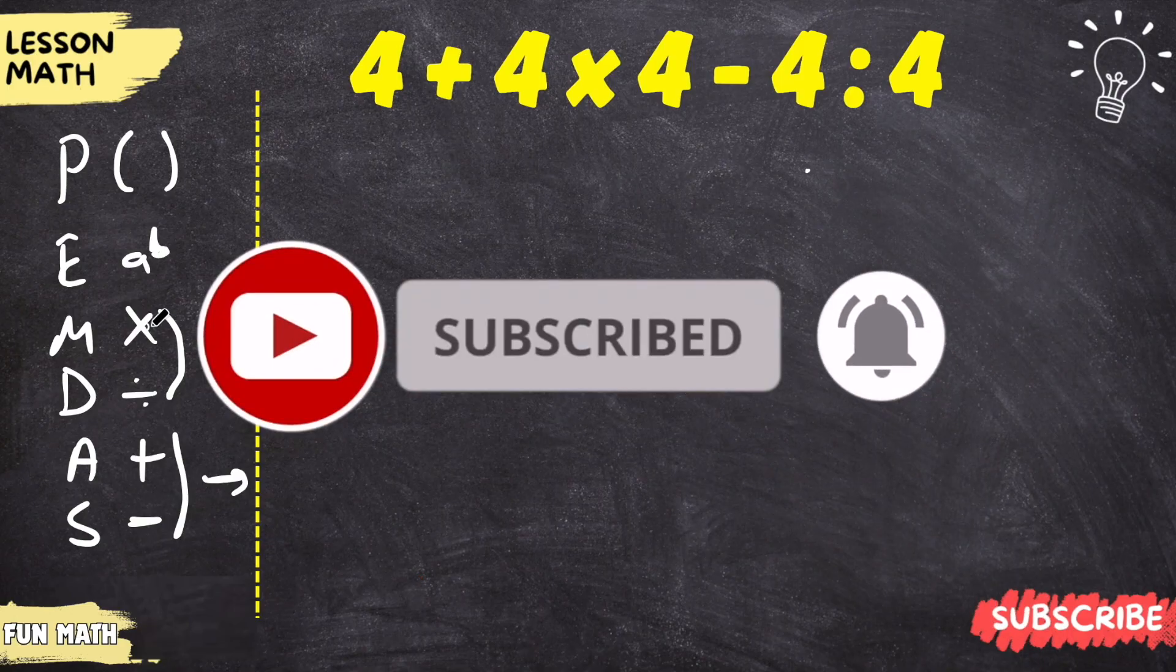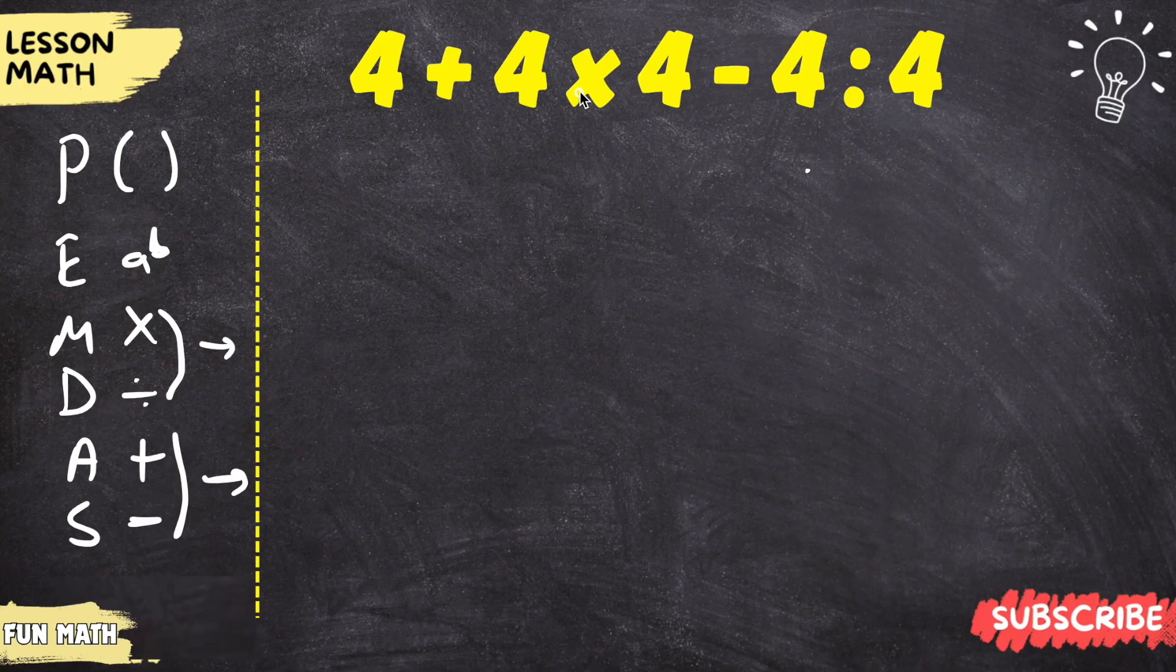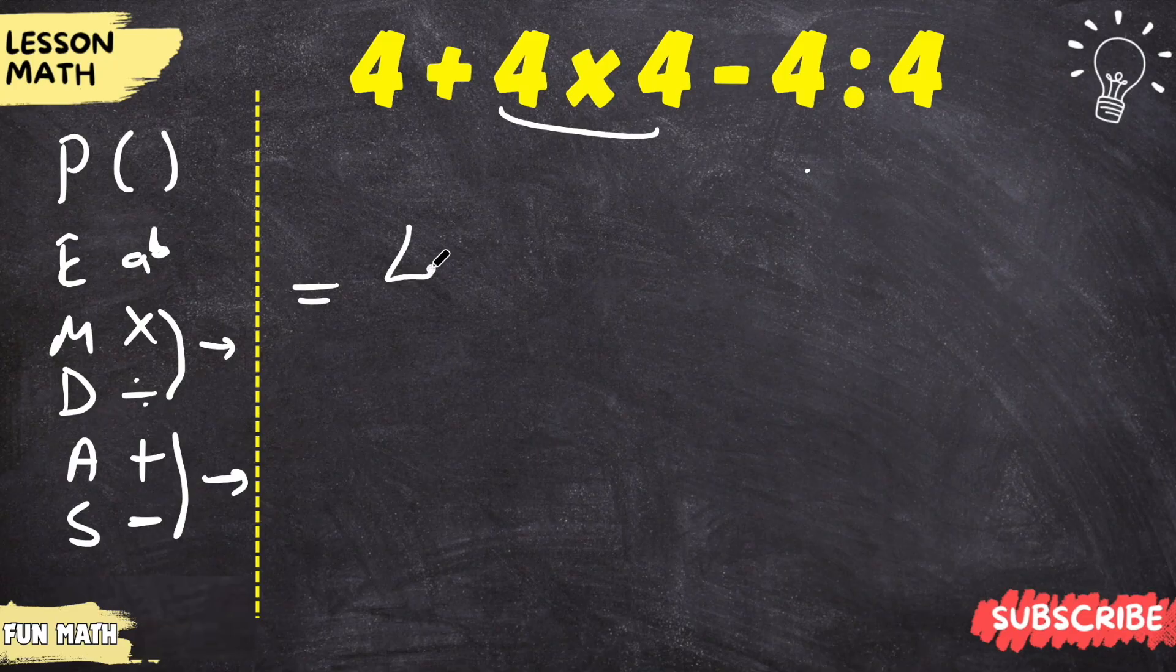According to this rule, what do we do first? We'll multiply and divide. We said left to right. Let's do the multiplication first. 4 plus 4 times 4 is 16, minus 4 divided by 4.